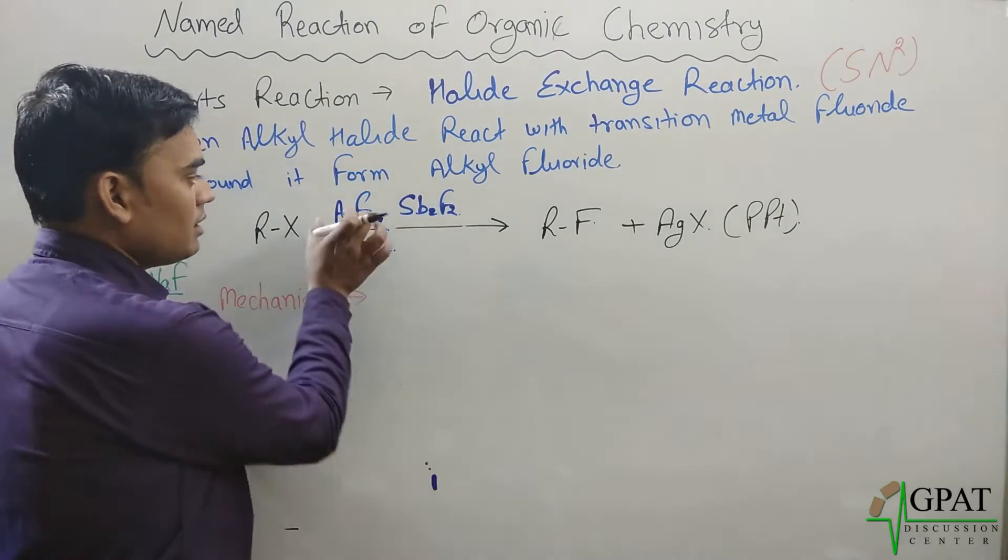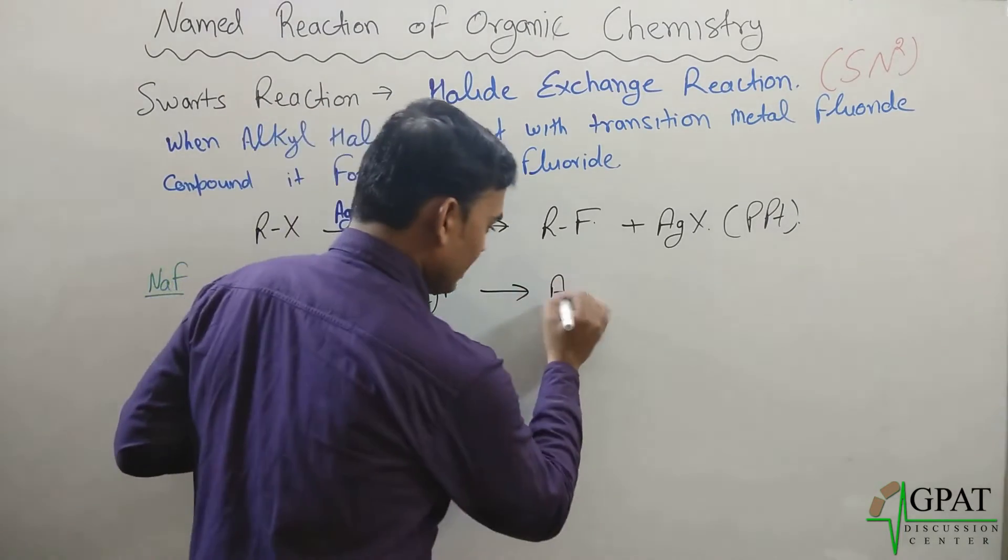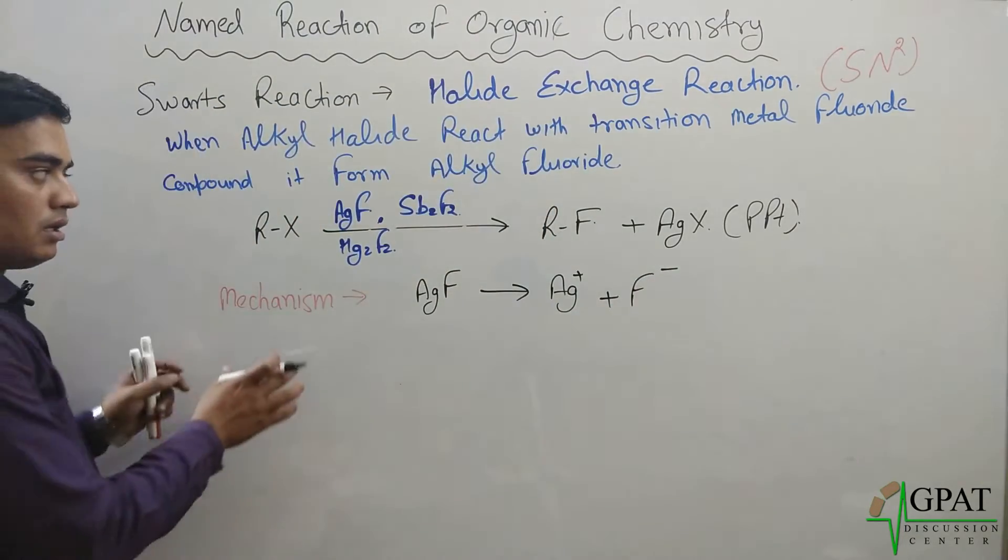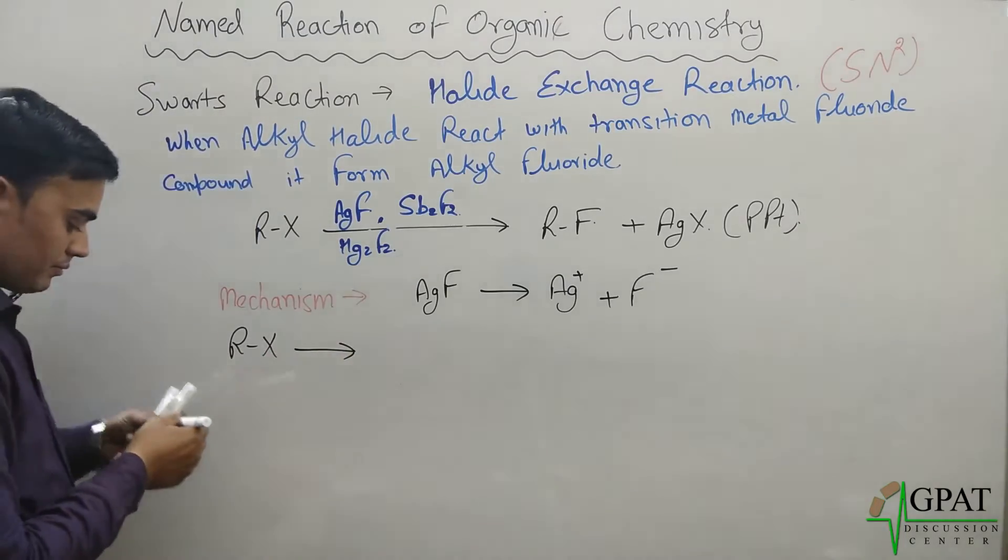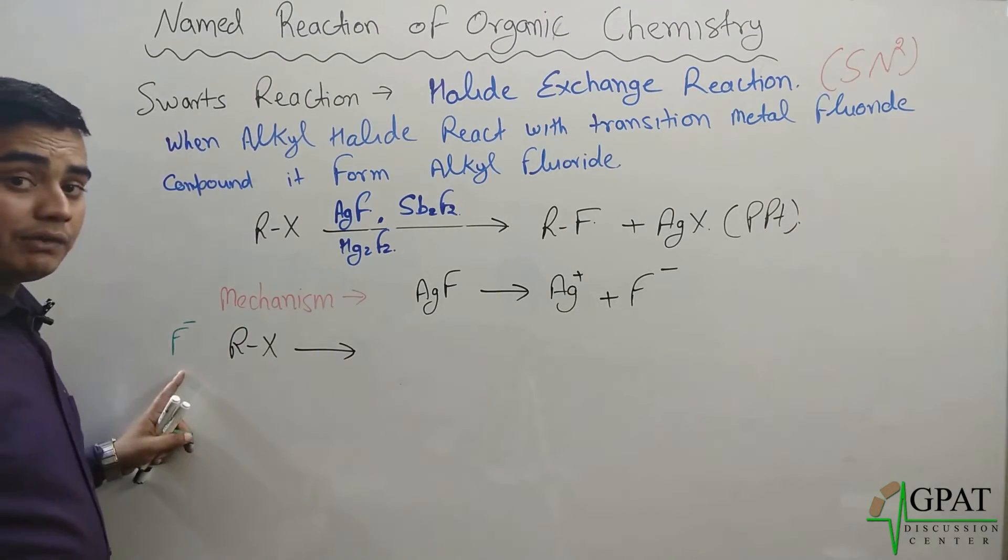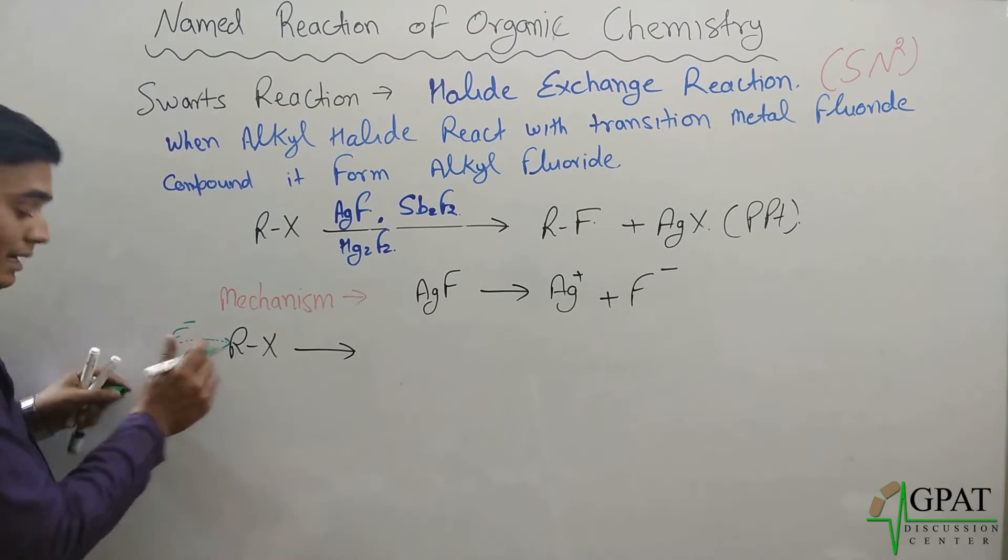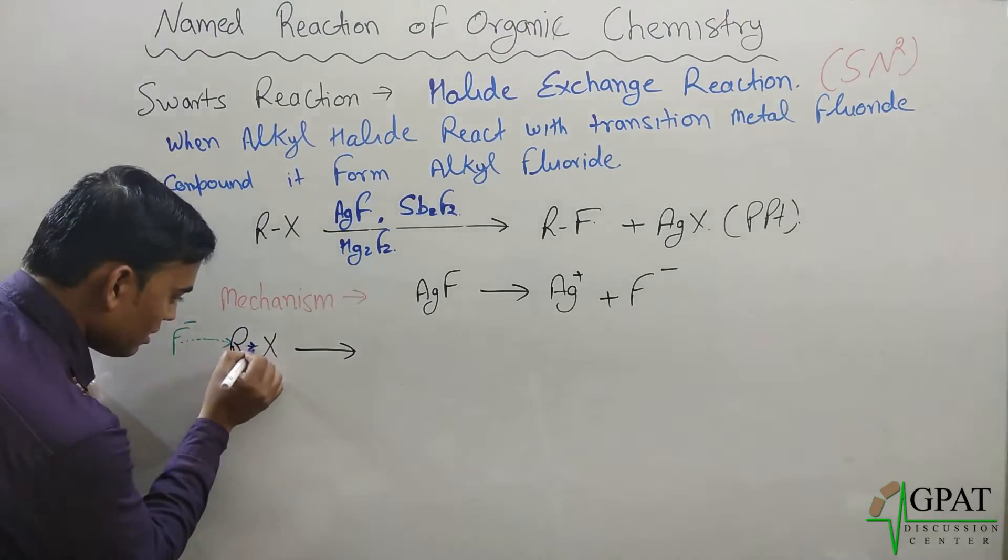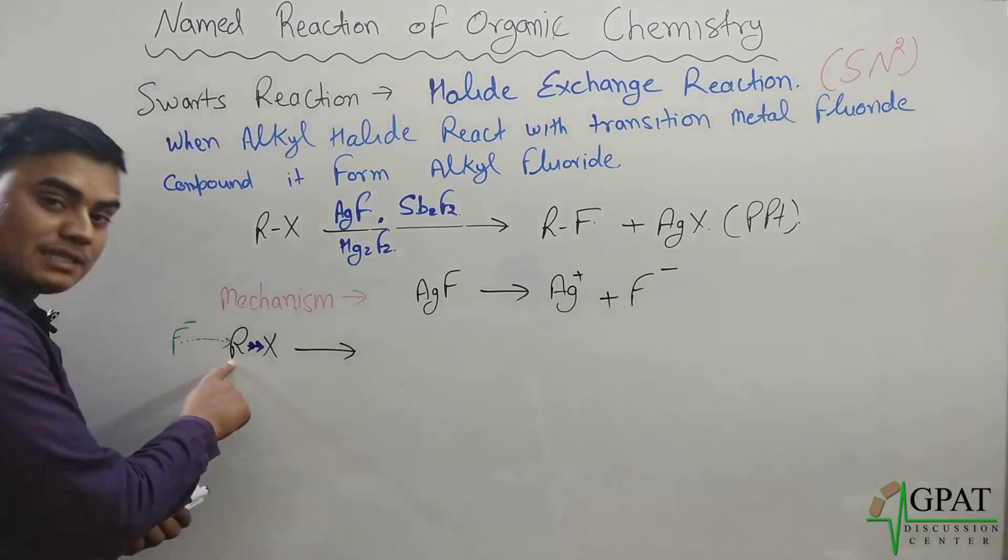If we take a mechanism, so firstly, we will take, suppose, silver fluoride, then this AgF will get breakdown and form Ag+ and fluorine has the negative charge. Now, this alkyl halide RX, when this fluorine compound, when this fluorine compound has the higher electronegativity in all the halogens. So that's why, when this fluorine will attack on this alkyl, then this bond,